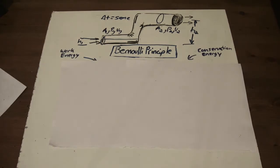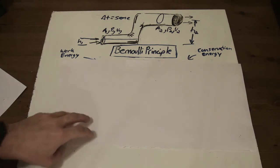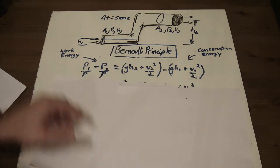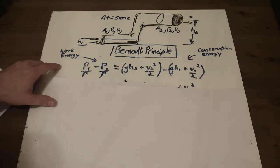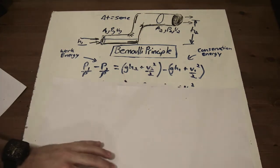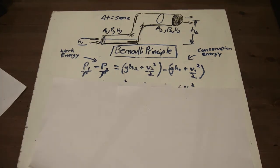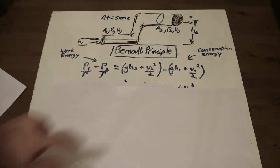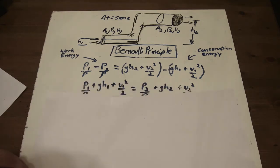All right. So now we look at combining these equations from the last segment. We're going to have our work energy segment on the left here. And we're going to have the conservation energy segment on that side. And so now if we take all the in components or the one components and we take all the two components or the out components and put them on their respective sides, we are left with that equation.